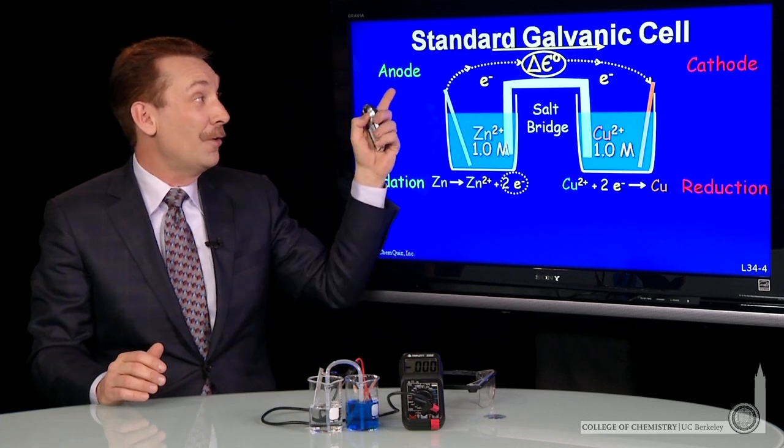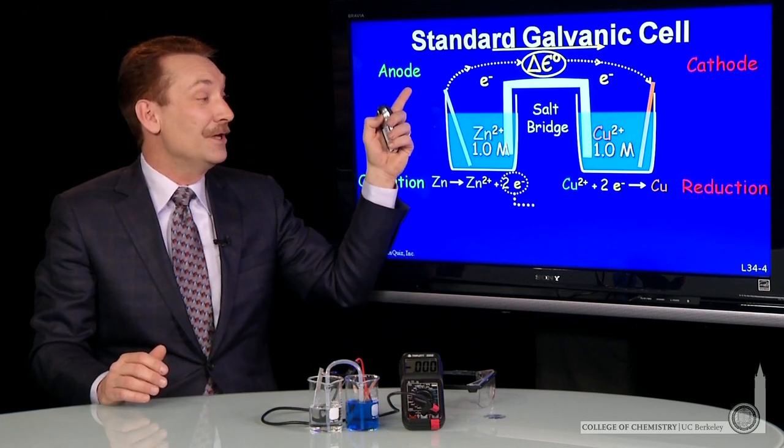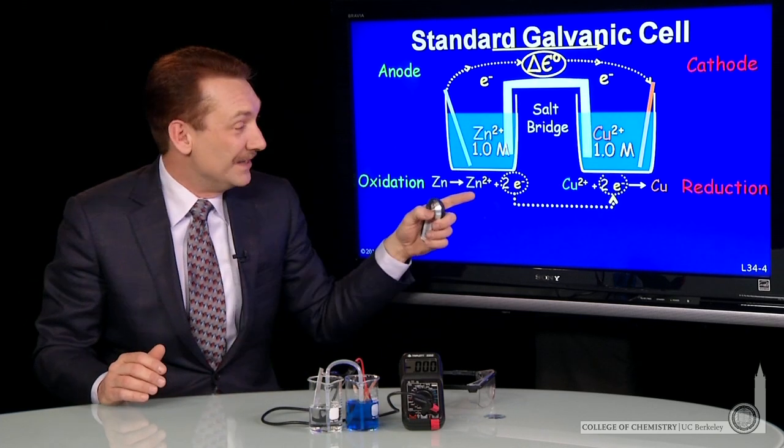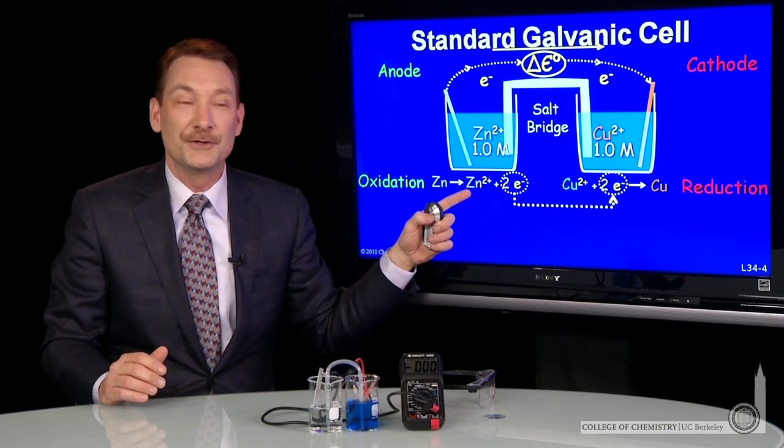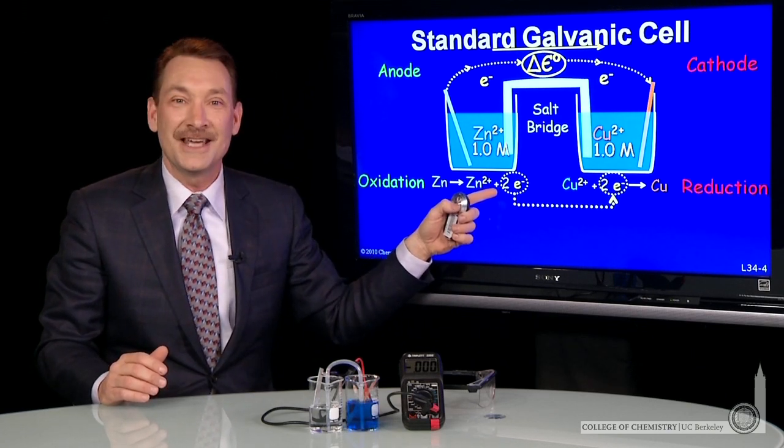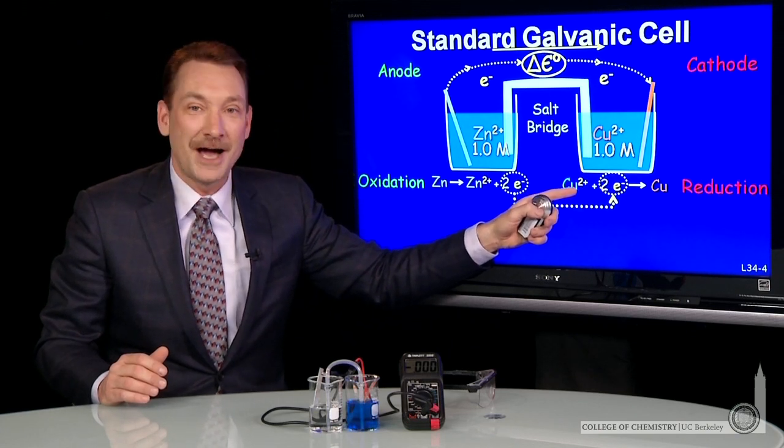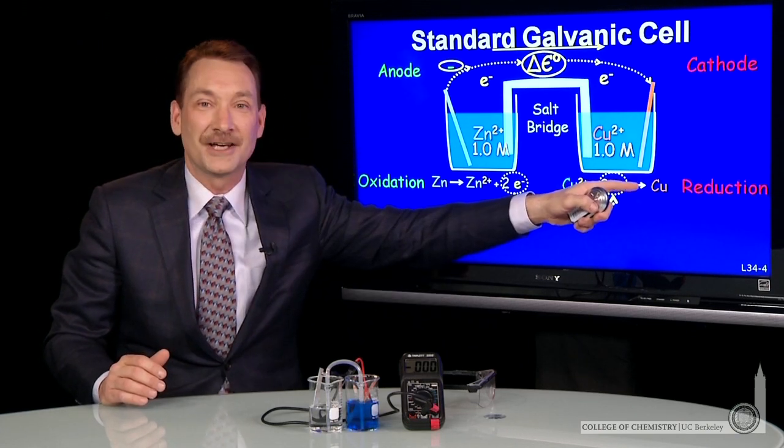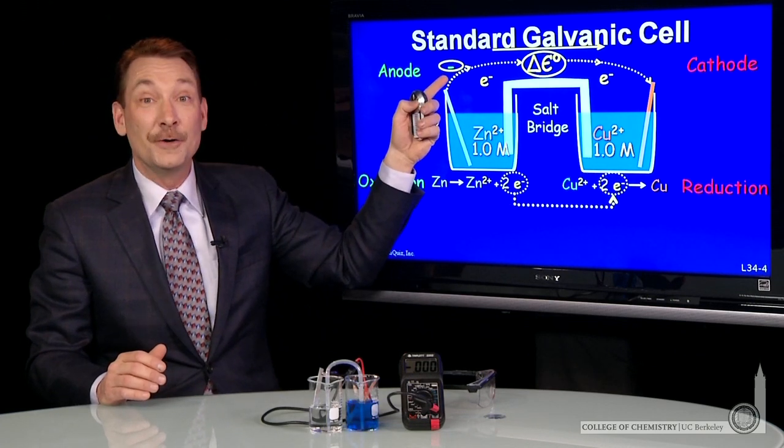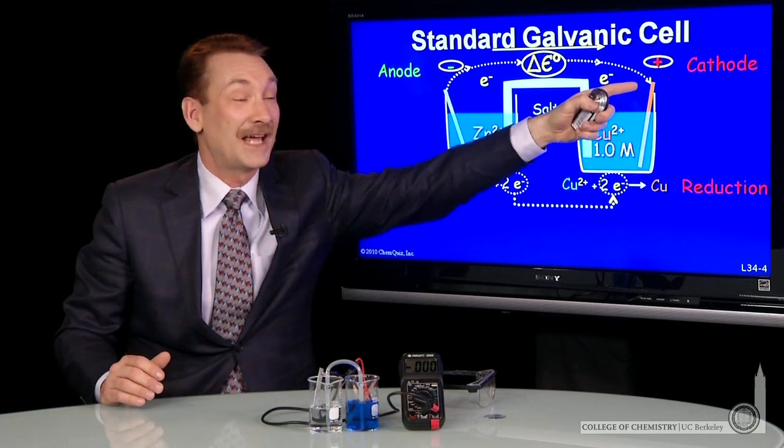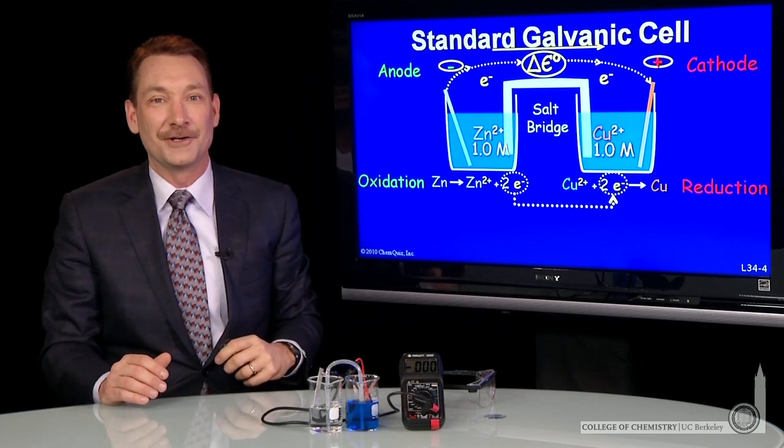Electrons flow from the anode to the cathode. In this case, the two electrons produced by the oxidation of the zinc flow and come in contact with copper ions and reduce the copper metal. So the flow is from an anode negatively charged to a cathode positively charged.